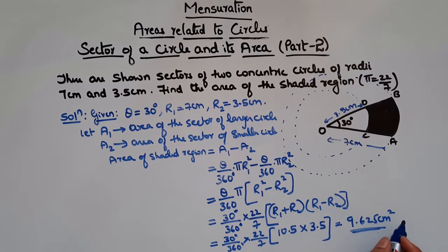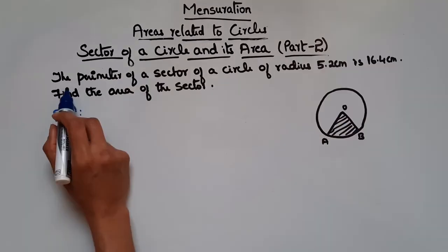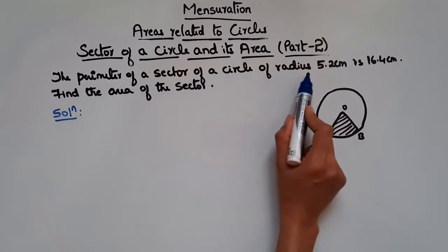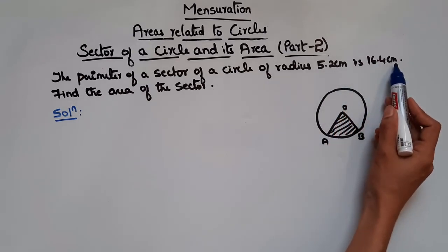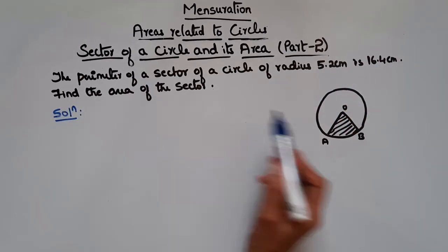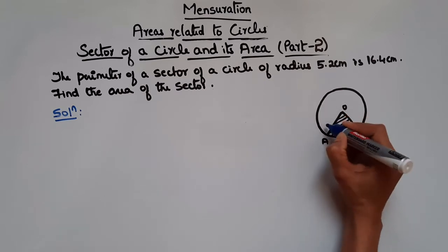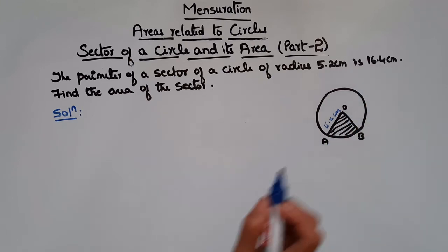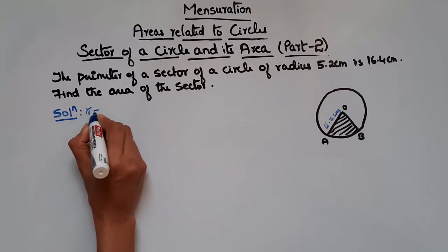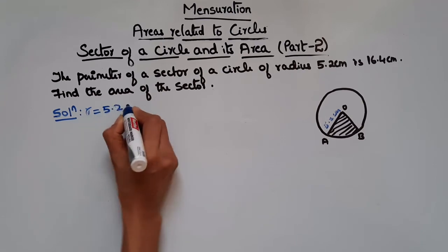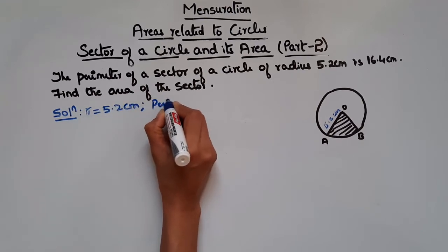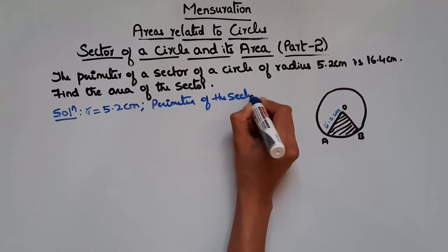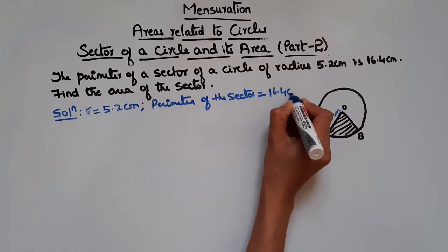I hope this is clear. Now let us see one more problem. Here a figure is given. It says the perimeter of the sector of the circle of radius 5.2 centimeters is 16.4 centimeters. Find the area of the sector. The radius of the circle is given as 5.2 centimeters and the perimeter of this sector is 16.4 centimeters.